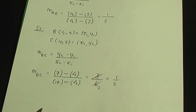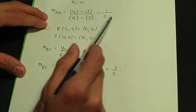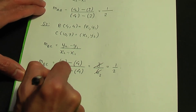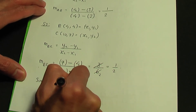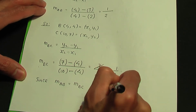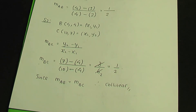Since M(AB) = M(BC) = 1/2, that implies points A, B and C are collinear. M(AB) is 1/2, M(BC) is also 1/2. Since M(AB) equals M(BC), therefore these points are collinear, meaning A, B and C all lie on the same straight line.